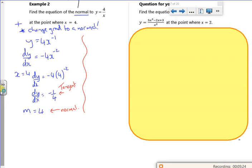So I've got the gradient. I just need the y value now. So I need y. So that's where the x is 4. So y is 4 over 4. So y is 1. So the coordinate is 4 comma 1.